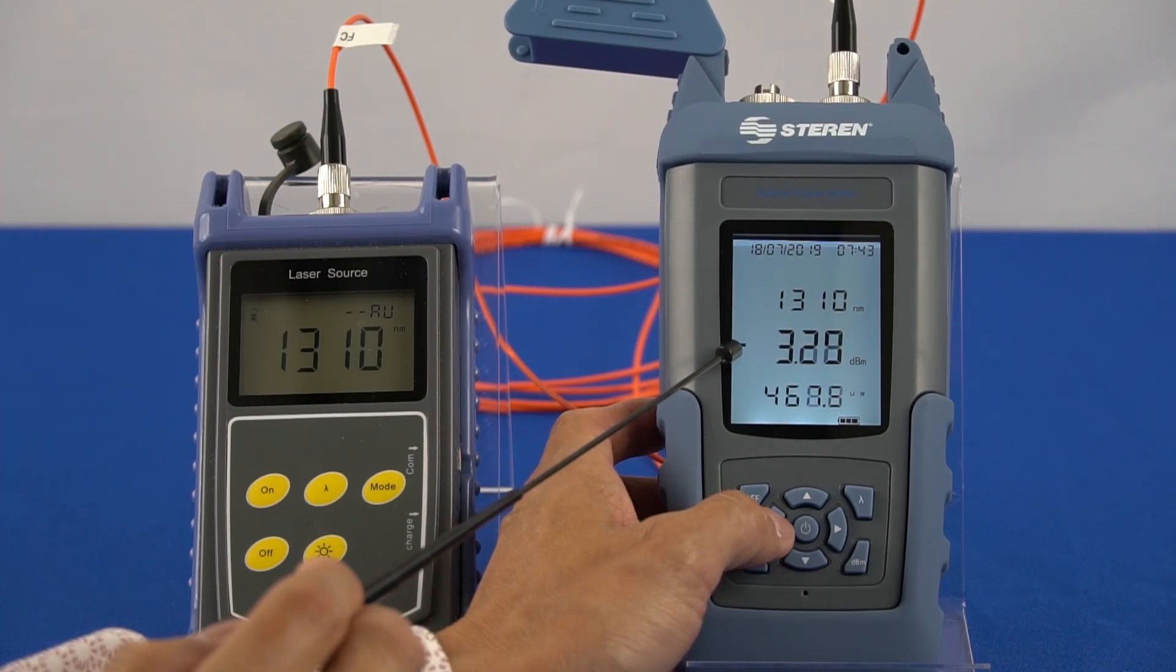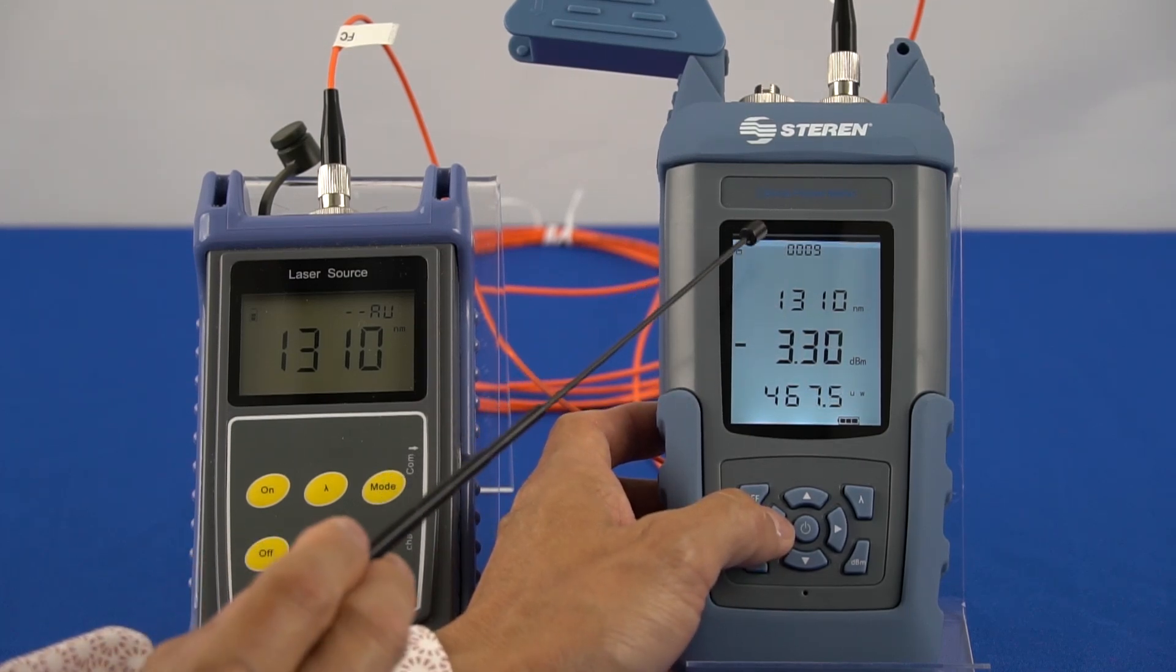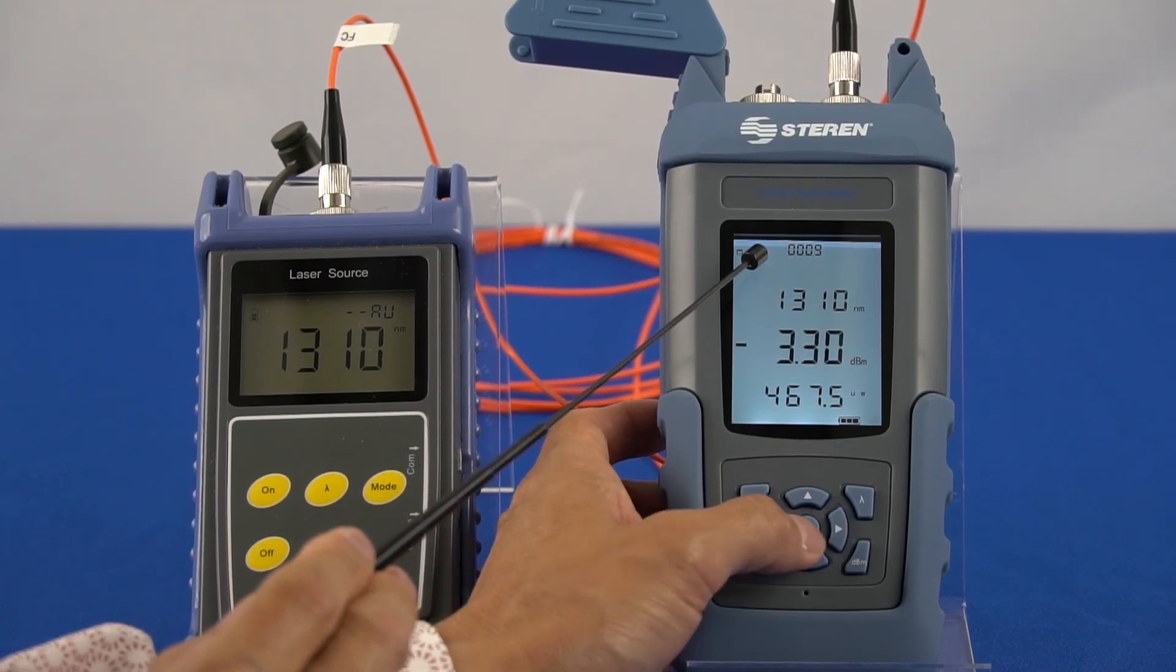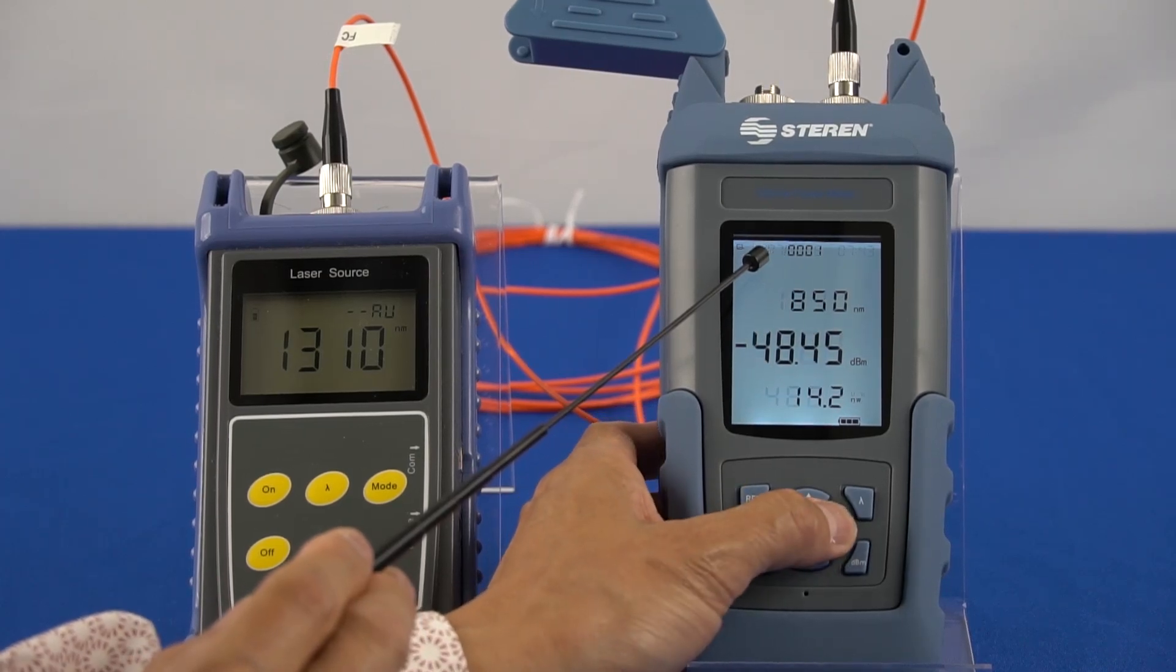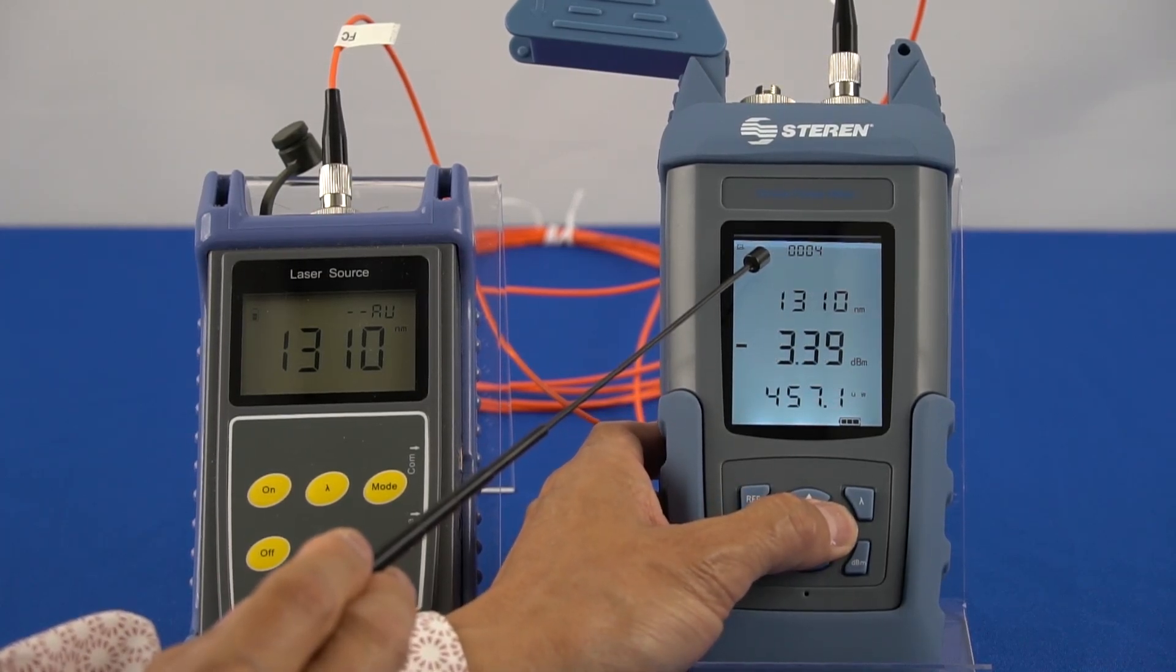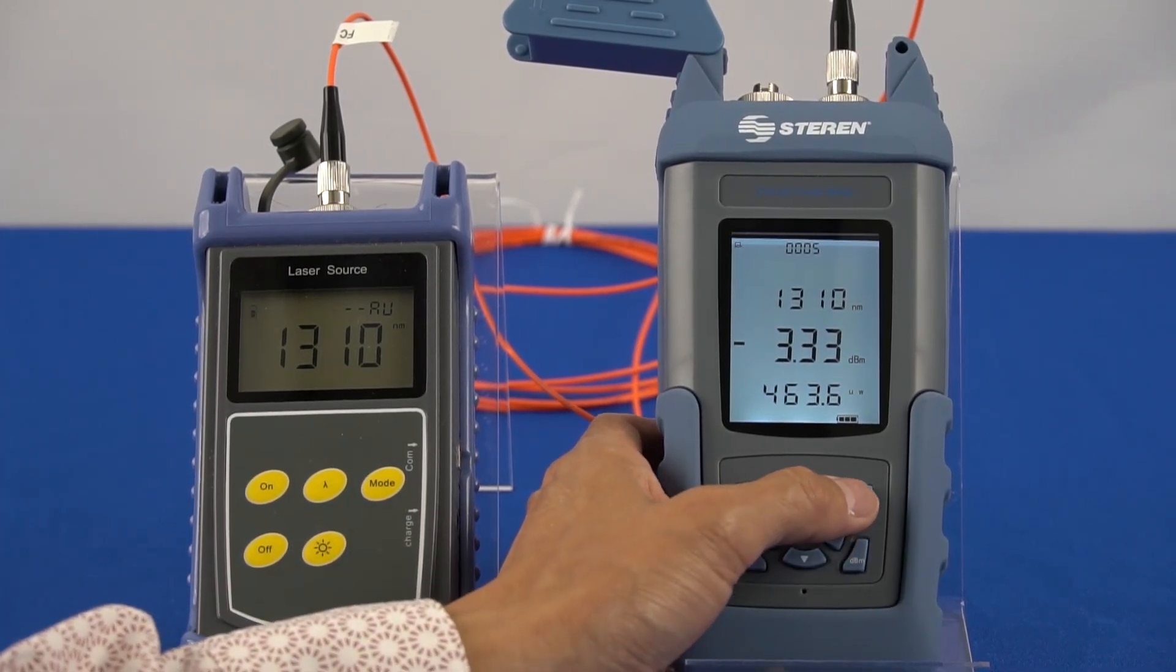If you press the right button, you enter the record browsing interface. Press the left and right buttons to browse through the records. To delete a record, press the lambda button.